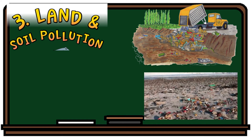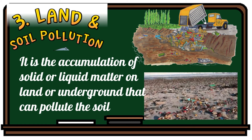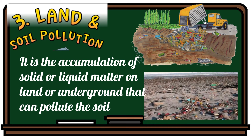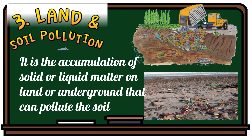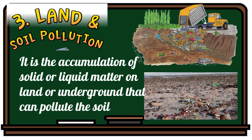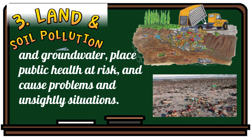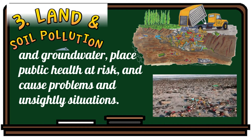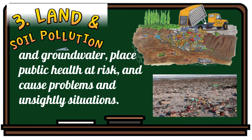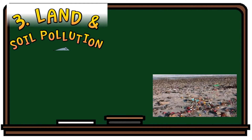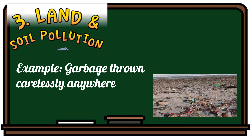The third kind of pollution is land and soil pollution. It is the accumulation of solid or liquid matter on land or underground that can pollute the soil and groundwater, place public health at risk, and cause unsightly situations. An example is garbage thrown carelessly anywhere.